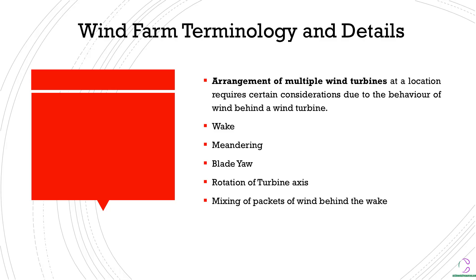The wake is basically the wind profile after it has crossed the wind turbine blades, so the packets of wind behind the wind turbine is the wake. For example, if you have a wind speed of 10 meters per second, once it crosses the wind turbine it can actually change — in most cases it's going to reduce within the boundary of where you have the wind turbine blades. According to various theories, as you move downstream to about 10D — which is the diameter of the wind turbine blade — you actually have the wind speed recovering.